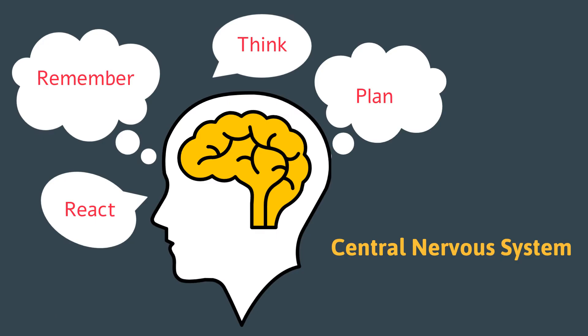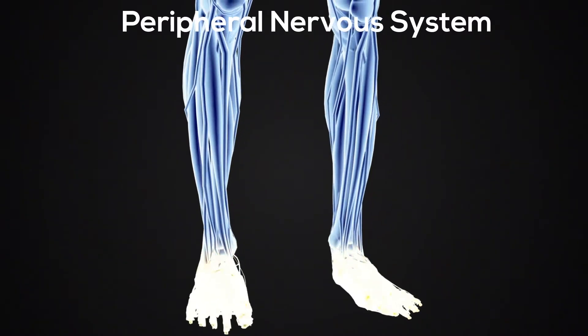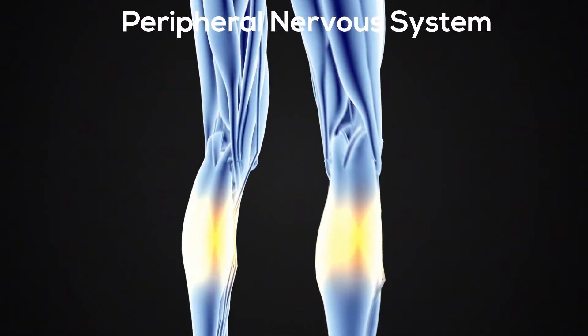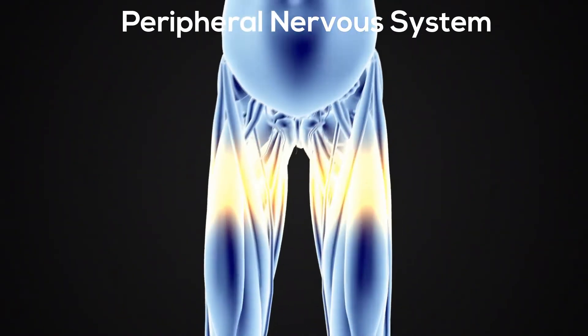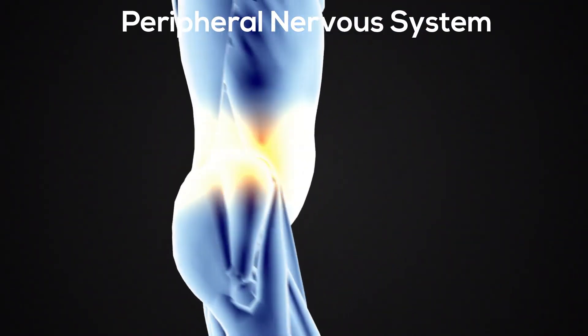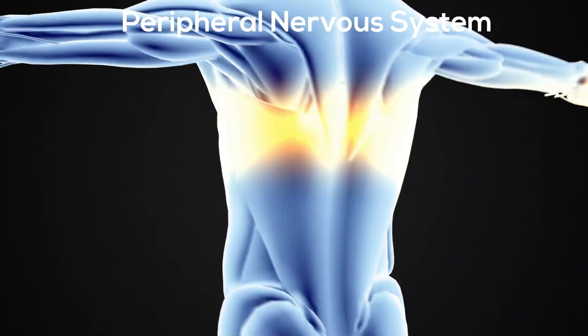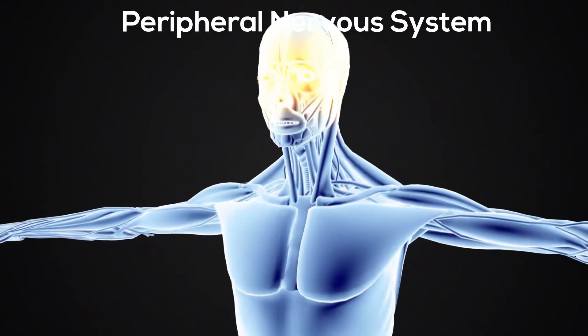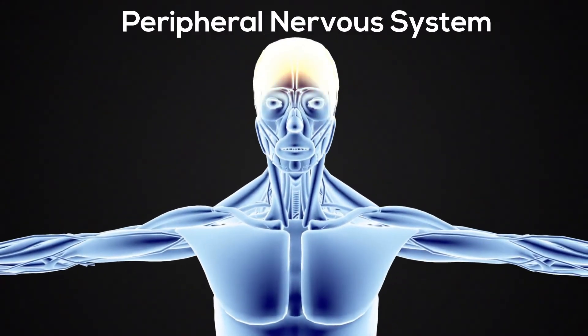The peripheral system is there to connect the central nervous system — which is the spinal cord and brain — to the limbs and organs. So therefore, it becomes a relay station between the brain, the spinal cord, and the rest of the body.